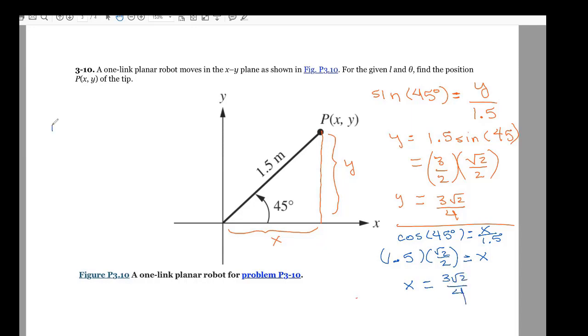My P of X, Y is equal to 3 times the square root of 2 over 4, comma, 3 times the square root of 2 over 4.